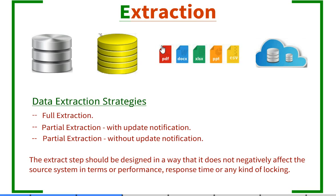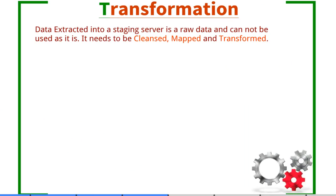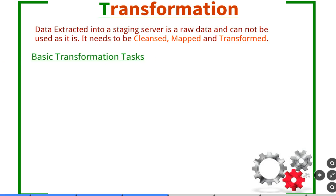Let's move on to the transformation phase. The data extracted into the staging server from the source system is in a raw format and we cannot use it as-is. It has to be cleansed, mapped as per the requirement, and transformed before it is finally ready for loading into a data warehouse. Let's look at the basic transformation tasks. First is selection, wherein we select the data which is required to be loaded into the data warehouse.